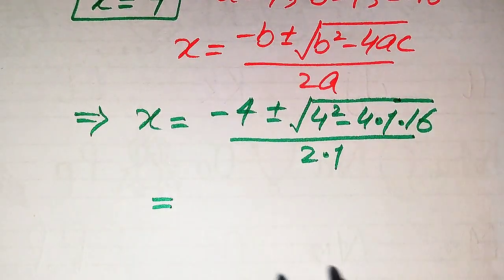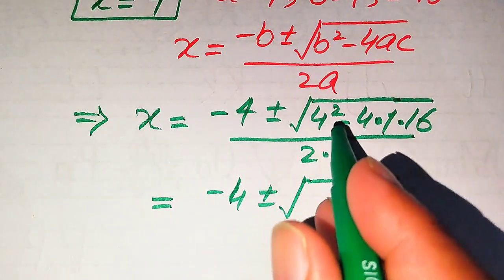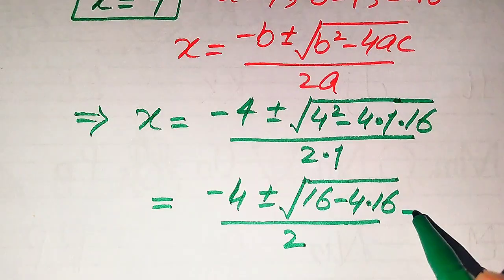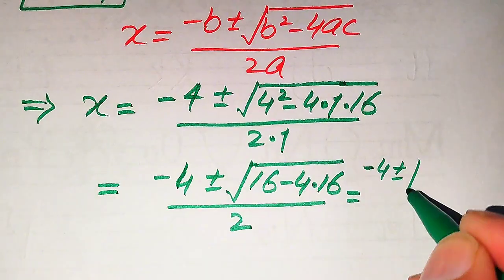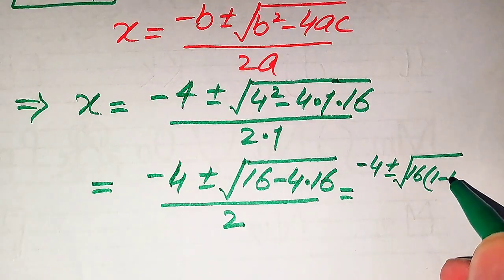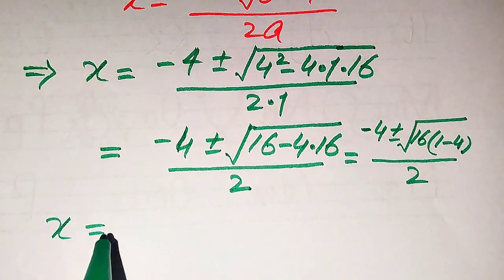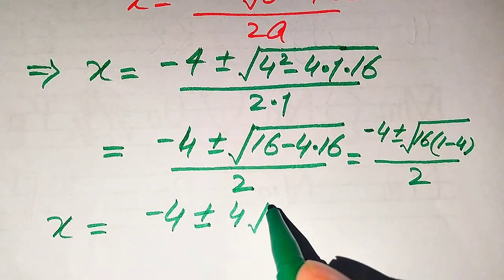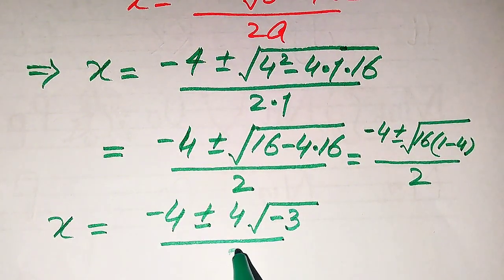In the next step we have minus 4 plus or minus square root of 4 squared — which is 16 — minus 4 times 16, divided by 2 times 1, which is 2. We take common factor 16 from inside the square root, and the remaining values are 1 minus 4. So we have x equals minus 4 plus or minus square root of 16, times square root of 1 minus 4, which gives square root of minus 3, divided by 2.